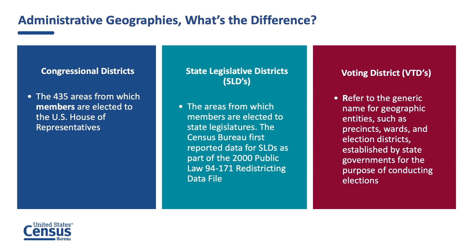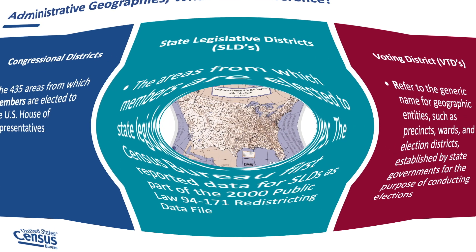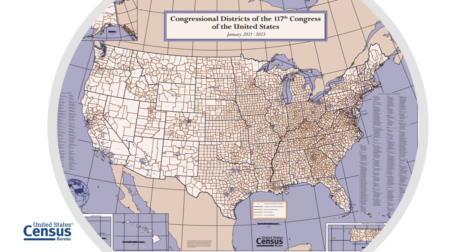When talking about redistricting, it's important that these three administrative geographies are understood. Geography is always a central topic when talking about Census Bureau data because you must define the container for your data. These geographies are related to redistricting because they form the container of voters for their respective government representatives. Congressional districts are the 435 areas from which members are elected to the U.S. House of Representatives.